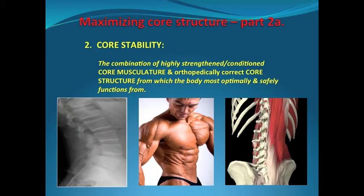The second term is core stability. Core stability is the one core structure the human body most safely and optimally functions from, combined with highly strengthened core musculature, allowing for proper direction and range of pull of the core musculature.